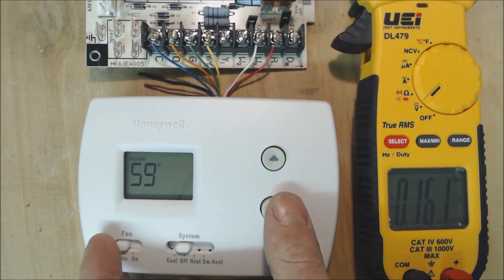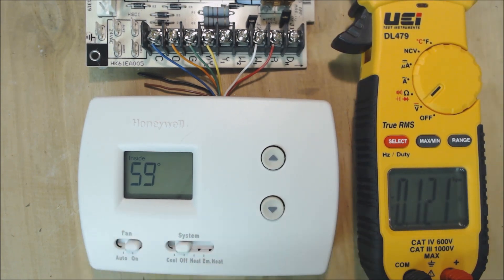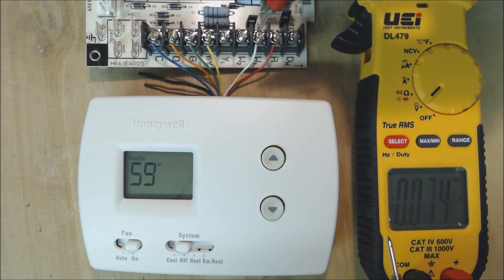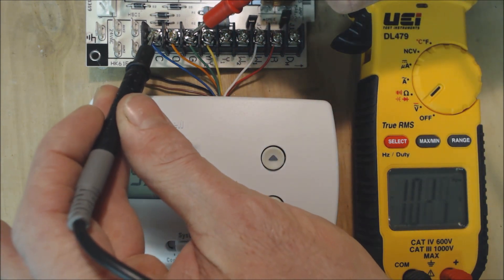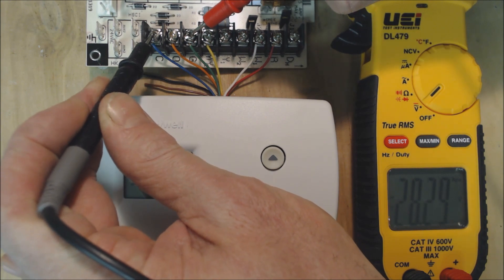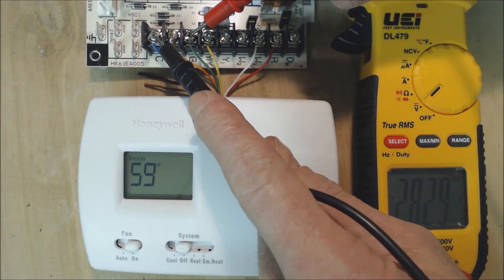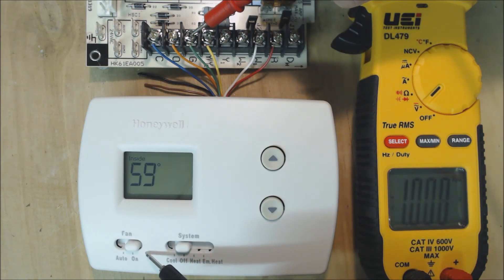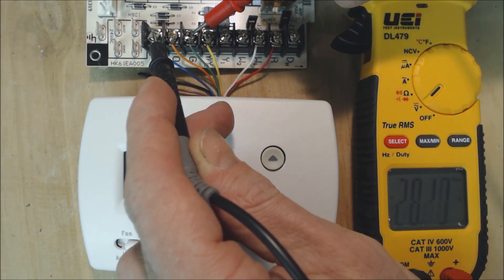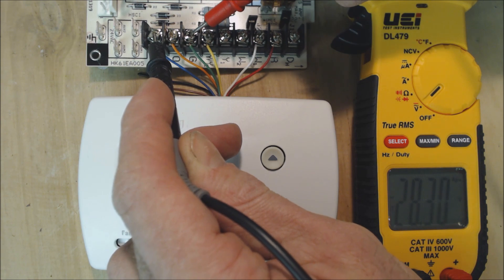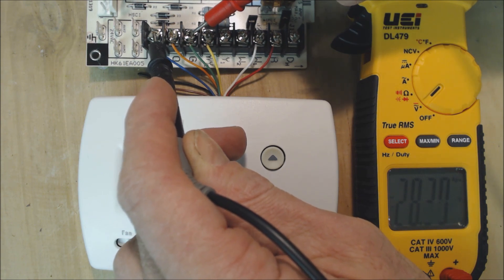Now let's go ahead and turn on the fan only. That means R is connected to G, and G is coming back. We should have 24 volts over here indicated by our 28 volts. We have 28 volts now because our fan is on. That's how we verify that our thermostat's actually working properly.